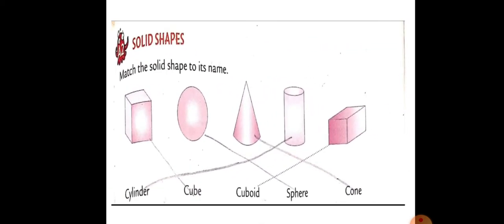Humne yeh shapes aur patterns ka lesson second standard mein kar liya hai — iske liye bahut hi easy lesson hai. A2: Solid shapes — match the solid shapes to its name. Match karna hai: yeh cube, yeh sphere, yeh cone, yeh cylinder aur cuboid.